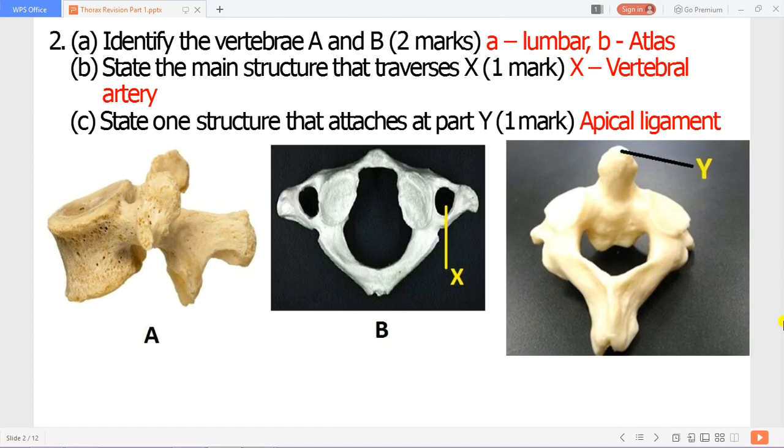Vertebra A is lumbar, then vertebra B is the atlas. You can see the part level X on the atlas and that is the transverse foramen which passes the vertebral artery. One structure that attaches at part level Y is the apical ligament.